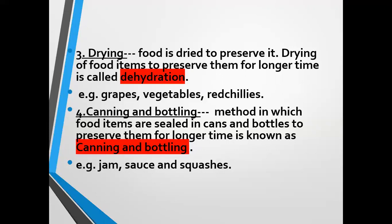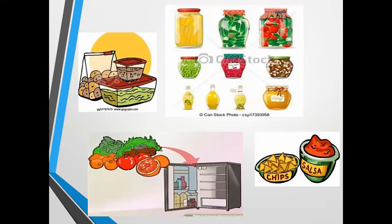The fourth method is canning and bottling — the method in which food items are sealed in cans and bottles to preserve them for a longer period of time. You must have seen jam in bottles, sauces, squashes, etc. They are preserved by canning and bottling.